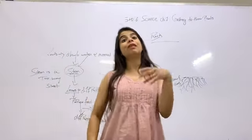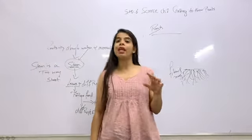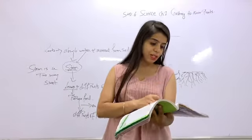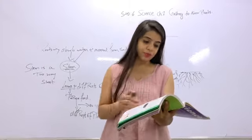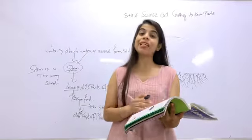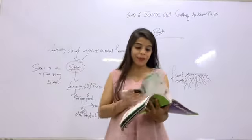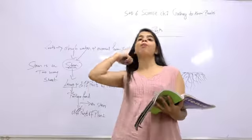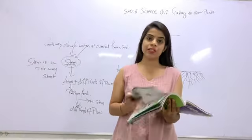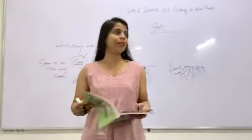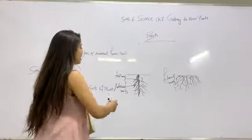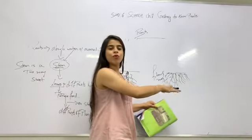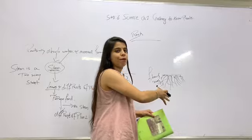Now let's go to the next part of the plant. The stem starts at the roots and connects to the leaf. We have the main root, lateral roots, and fibrous roots which are all similar to each other.